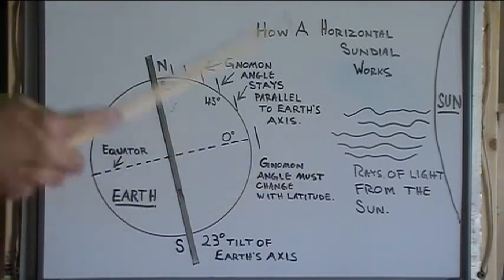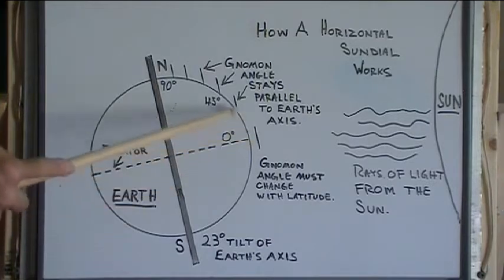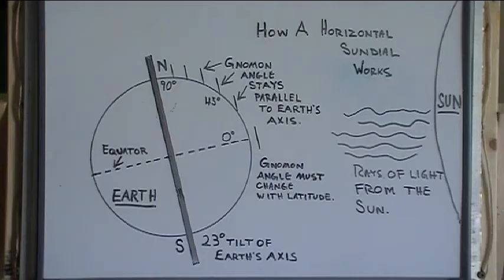And theoretically, we would have a reading all the way around on our dial for 24 hours. So there's the basics of how it casts the shadow and why we need to change the angle depending on our latitude. Now let's go put the pieces together and make a sundial.